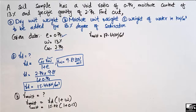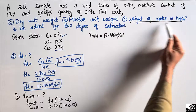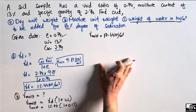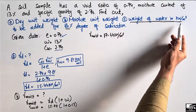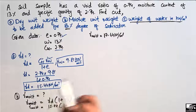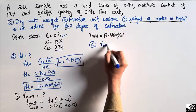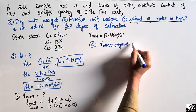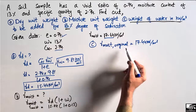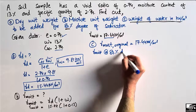The third unknown is the weight of water in kN per cubic meter that needs to be added to achieve 80% degree of saturation. To find this, we need to determine a new γmoist corresponding to 80% degree of saturation. The original γmoist is 17.44 kN per cubic meter, so we need to find γmoist at S = 80%.